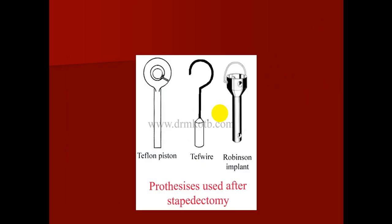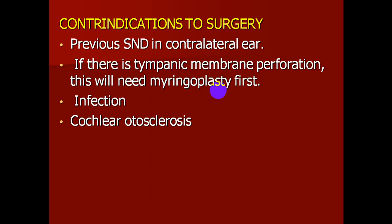There are many types of prostheses or pistons for stapedectomy. Contraindications to surgery include: previous sensorineural hearing loss in the contralateral ear; perforation of the tympanic membrane (myringoplasty should be performed first, then stapedectomy later); active infection; and cochlear otosclerosis, which is associated with sensorineural deafness.